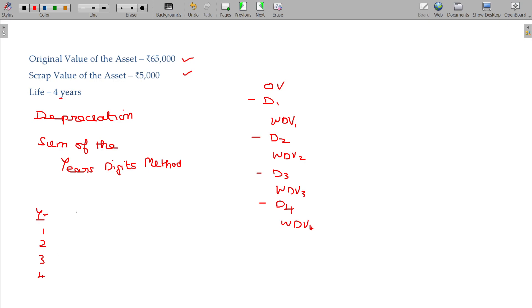The depreciation counterpart rank, so the depreciation remember is simple. In the year after you count 4, 3, 2, 1. And the summation you will have 10. 4 by 10 of depreciable amount. Now the original value is 65,000, scrap value 5,000, life is 4 years. The difference between original value and scrap value is called depreciable amount.